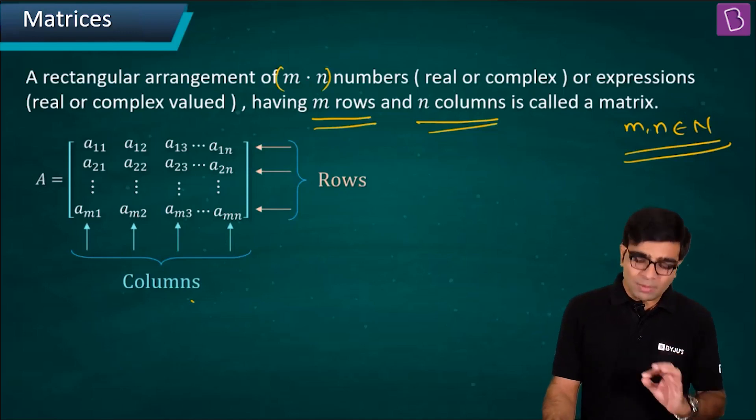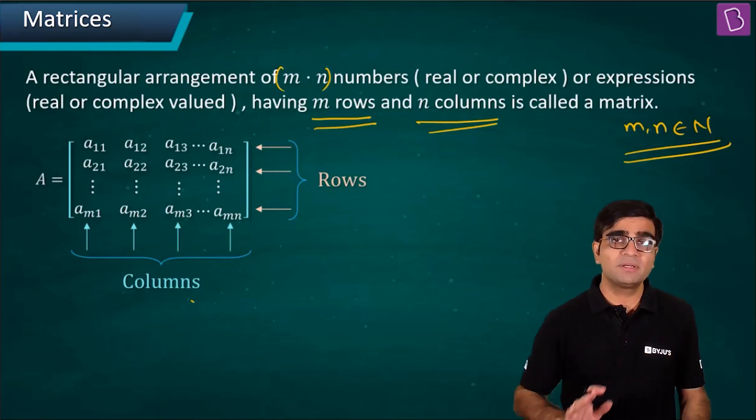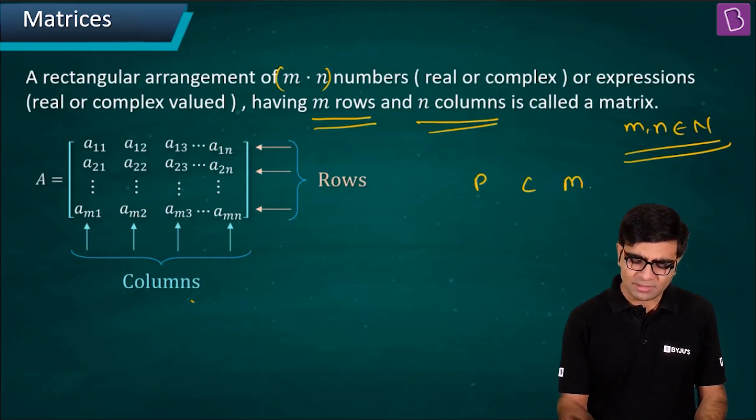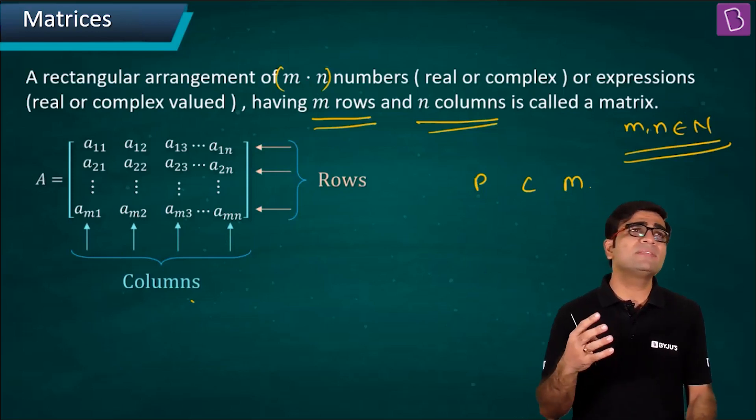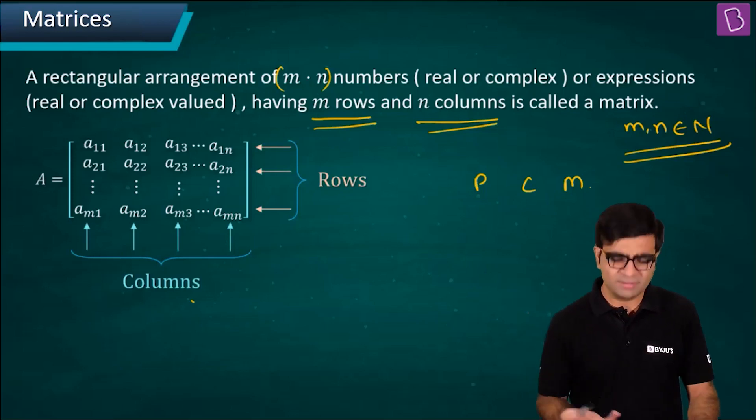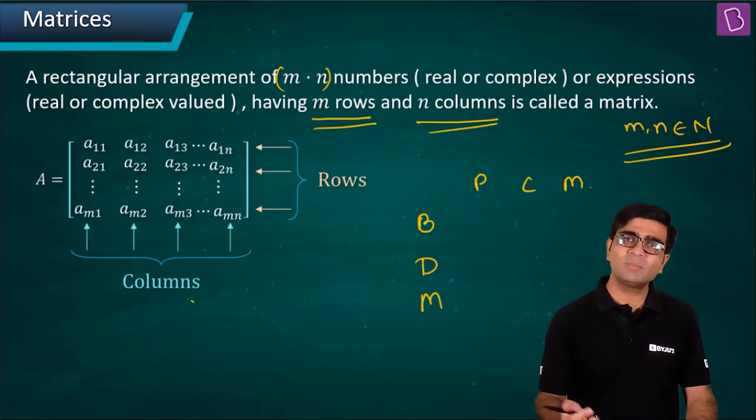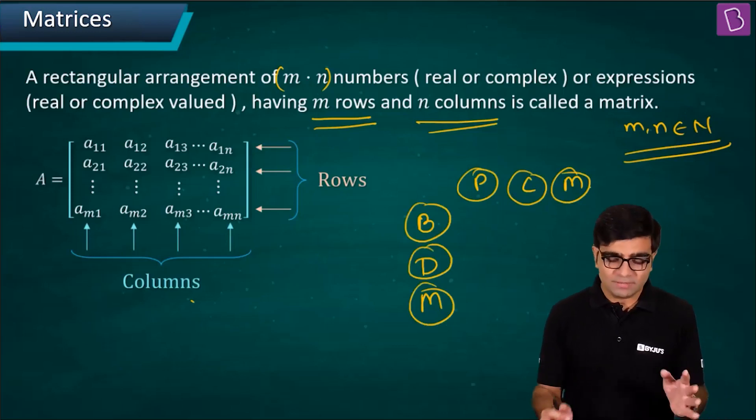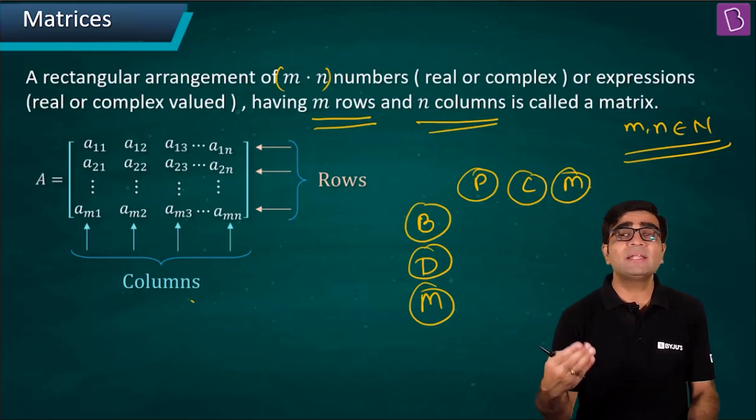Let me take an example. Let's say at Vedantu we have conducted a certain test. The subjects were physics, chemistry, and maths. I'm keeping these as columns. I want to see the highest scores in three different cities: Bangalore, Delhi, and Mumbai. My subjects are physics, chemistry, and mathematics, and my cities are Bangalore, Delhi, and Mumbai.